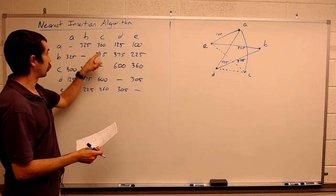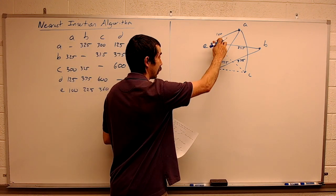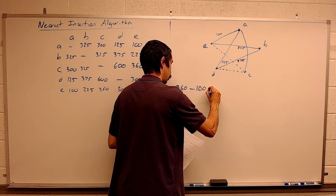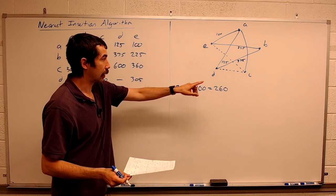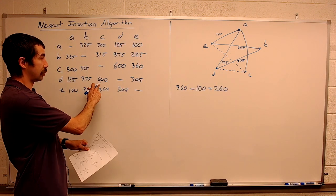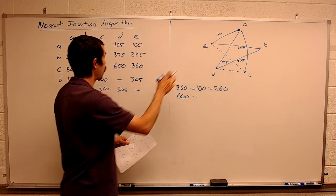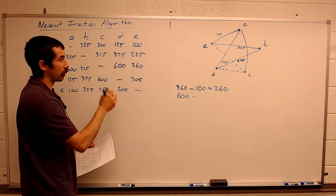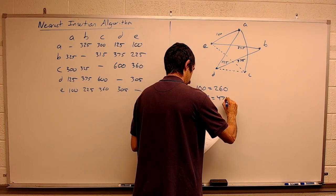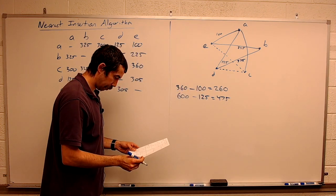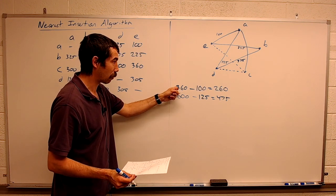So CE, CE is 360 minus EA. So this option would add the weight of 260. The other option is CD, 600 minus DA, which is 125. We pick the cheaper of the two, which is of course this one.